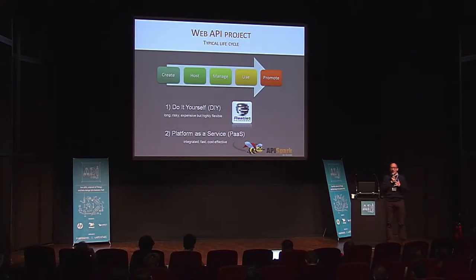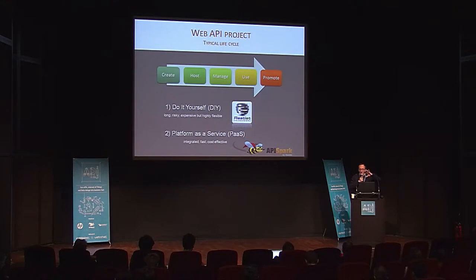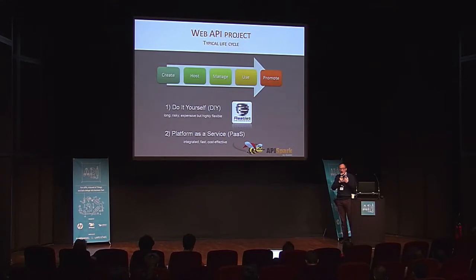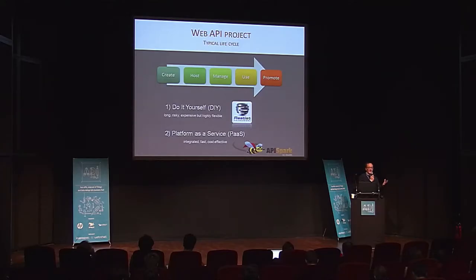There are two ways to do that. First is to build it from scratch. If you're a developer, you know how to do that — whether it's in PHP, Python, Java, whatever the language. Or you may use a platform that will help you do that. We're talking today about API Spark and the two possibilities: build it from scratch with the Restlet framework that we provide as open source, or use the platform as a service.